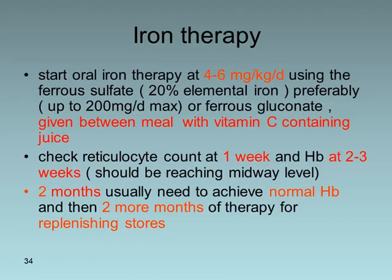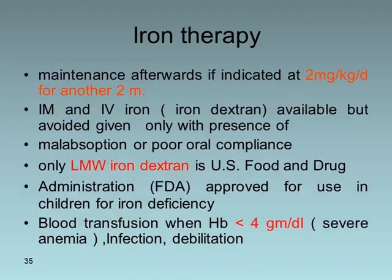Hemoglobin should reach the midway level within two months to achieve a normal level, followed by another two months of therapy for replacement of iron stores. The dose is then reduced to 2 mg/kg/day for a further two months as a maintenance dose.